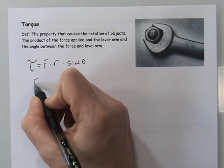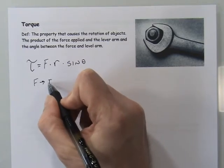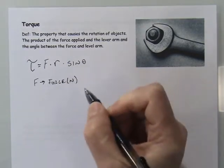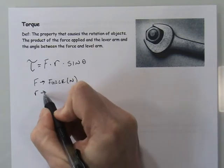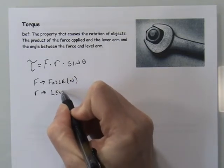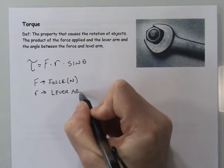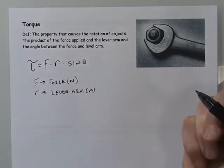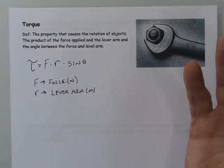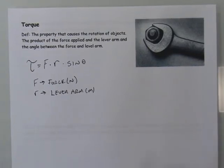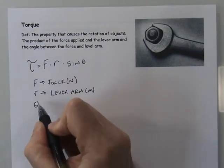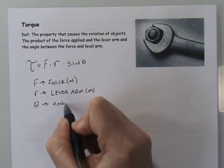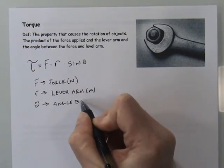So to be clear on everything: torque is a new property where F is the force in newtons, r is the lever arm generally in units of meters, and theta is the angle between F and r.